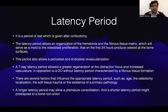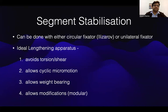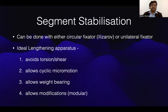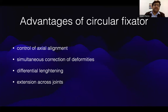A longer latency period may allow premature consolidation and a shorter latency period might predispose to bone non-union. Segment stabilization can be done with either a circular fixator or a unilateral fixator. The ideal lengthening apparatus avoids torsion or shear, allows cyclic micromotion, allows weight bearing, and allows modifications. The advantages of a circular fixator — the Ilizarov fixator — are that it controls axial alignment, can be used for simultaneous correction of deformity, differential lengthening is possible, and it can be extended across joints.